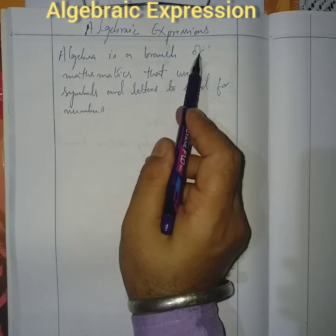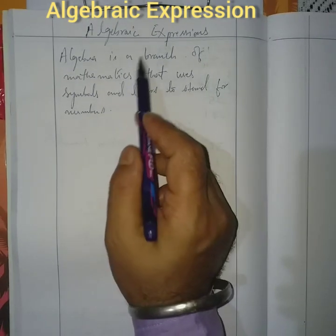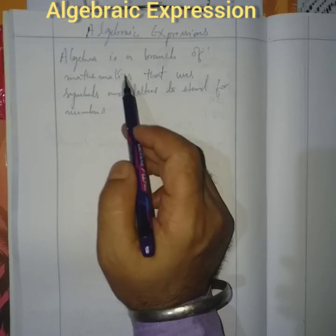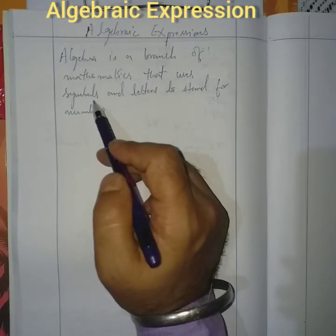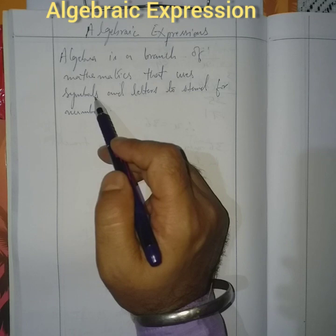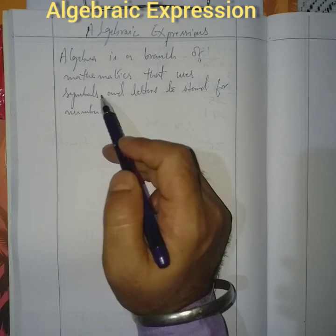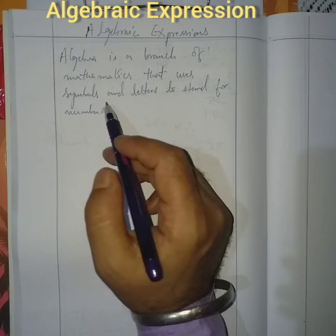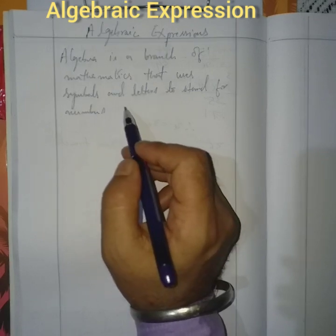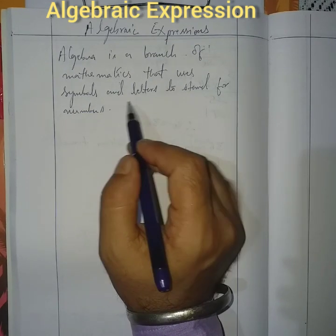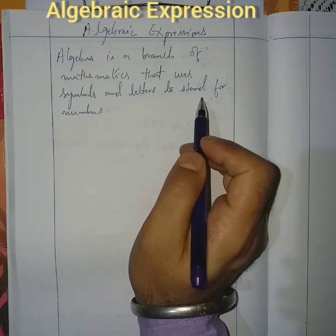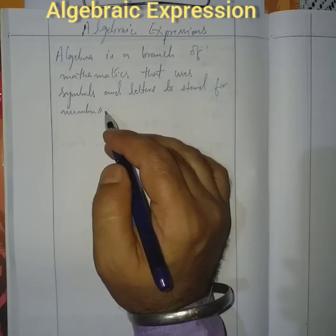Algebra is a branch of mathematics and it uses symbols — like X, Y, Z, A, B, C, D — any English alphabet letter to stand for a number.